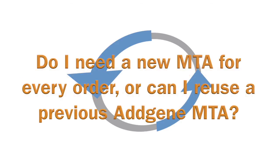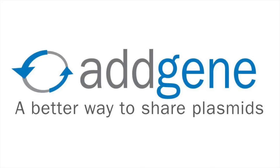Do I need a new MTA for every order, or can I reuse a previous Addgene MTA? Each order requires a new MTA. This is because each MTA is unique to the plasmids requested and lists specific information about the recipient, including the name and address of his or her institution. If the same plasmids are being requested by the same lab as a previous order, we can process a reshipment and apply your original MTA. In this case, please email us at help@addgene.org and provide the original order number and the catalog numbers of the items you need reshipped. For further information, please reference our FAQ page at addgene.org/FAQ. Thank you for choosing Addgene — a better way to share plasmids.